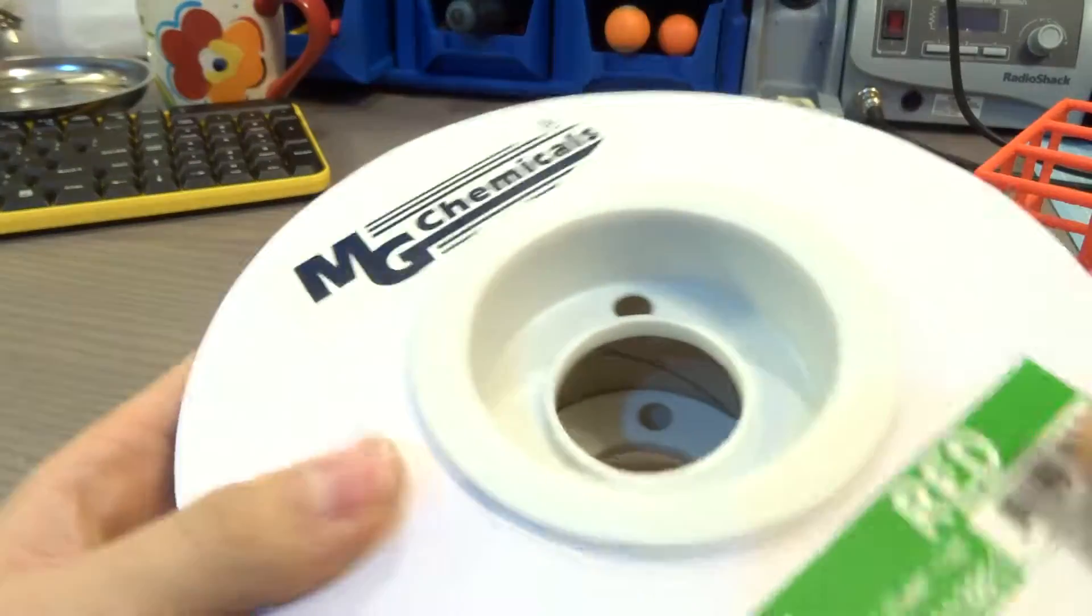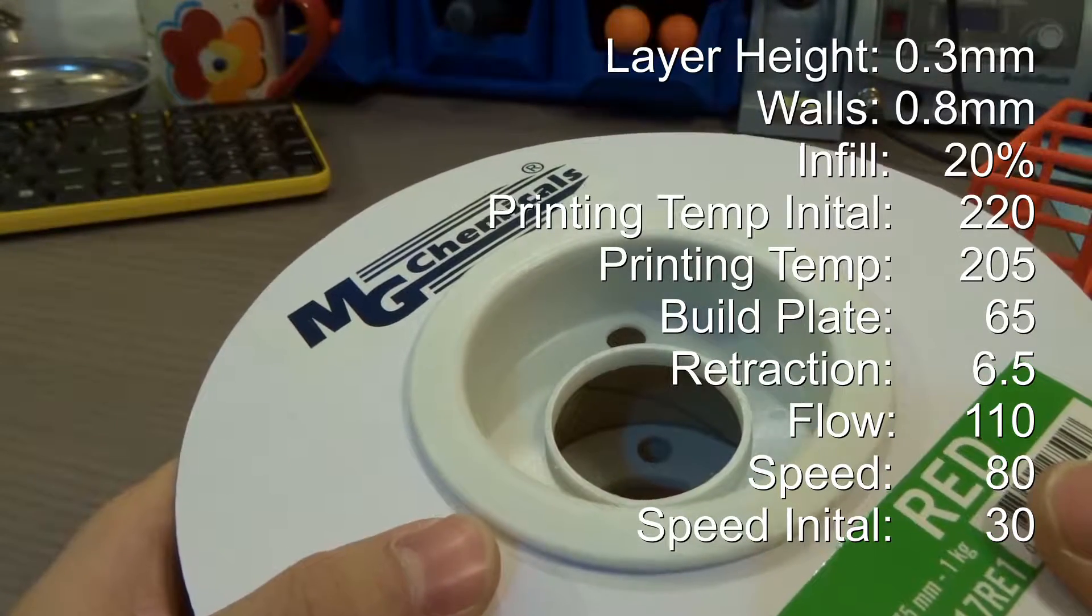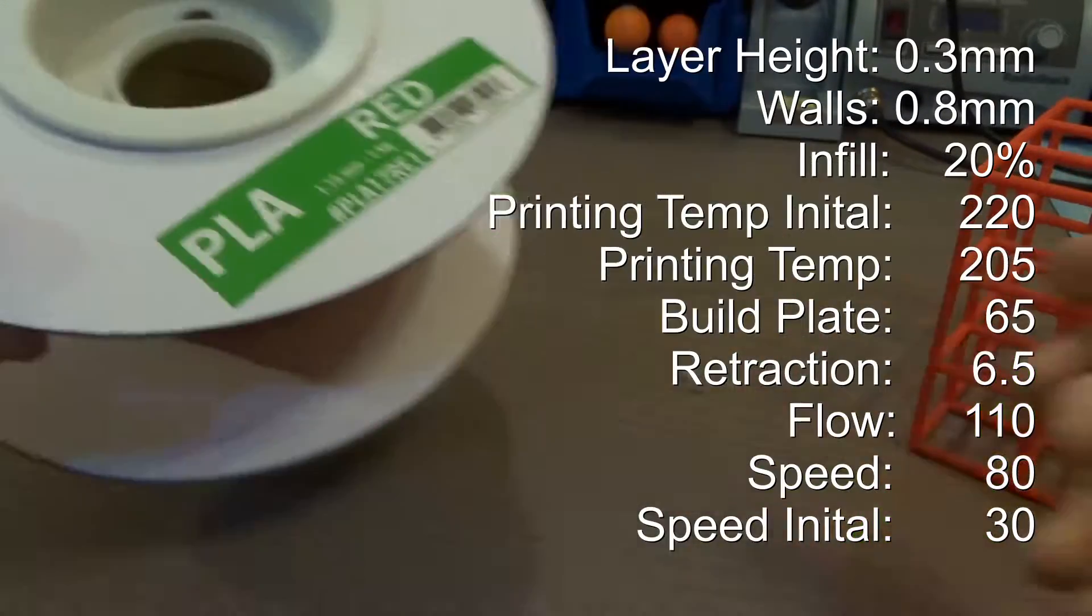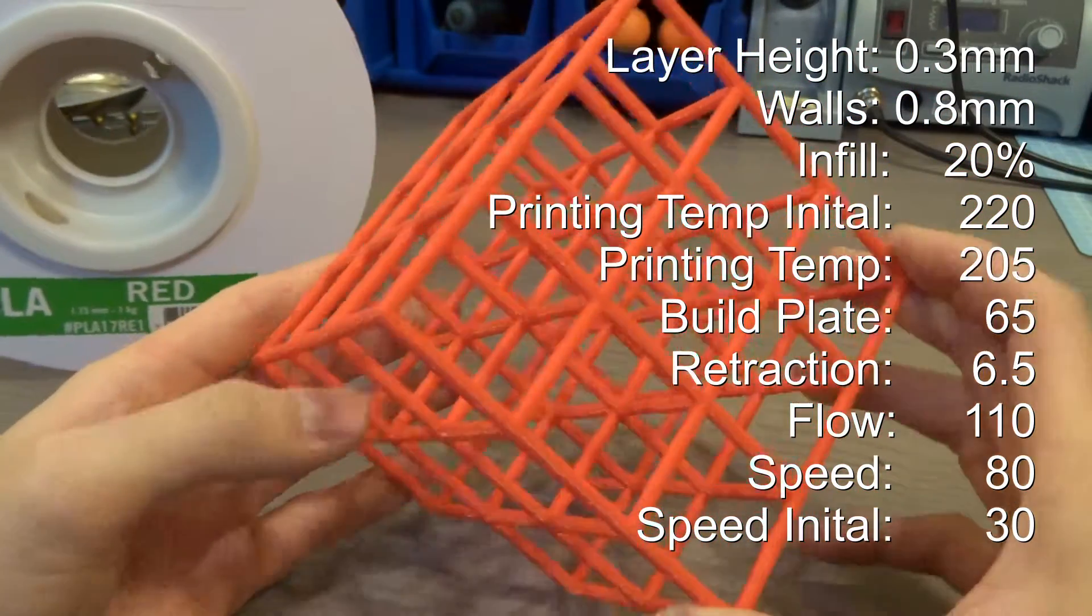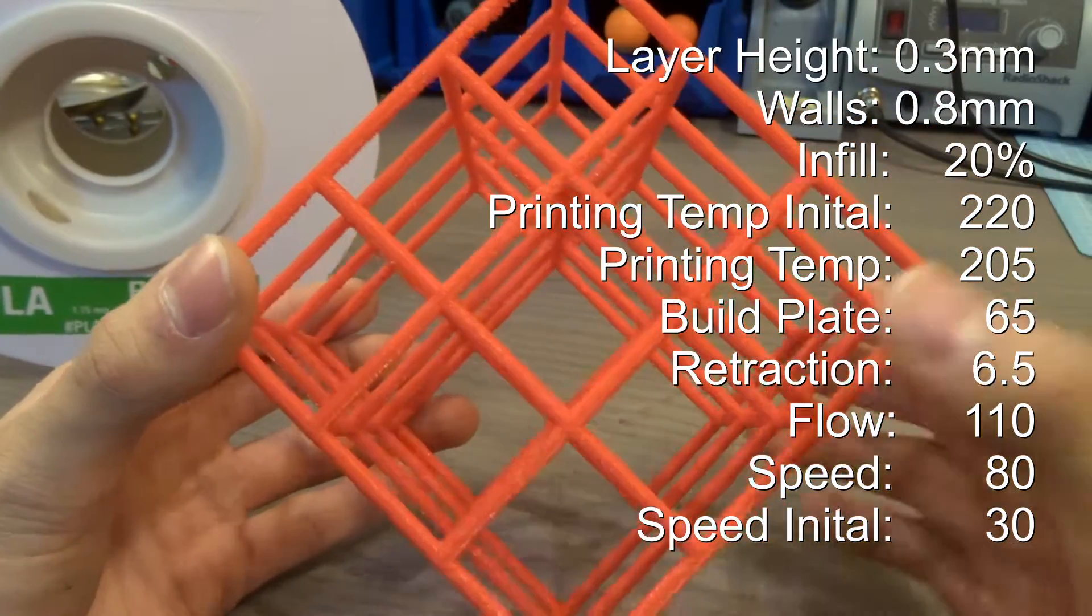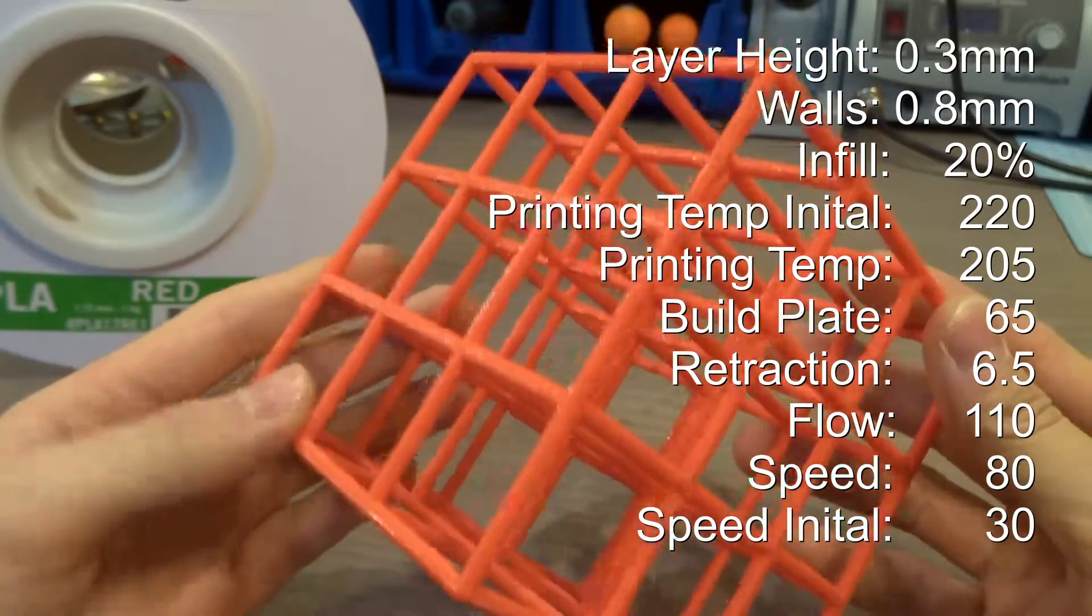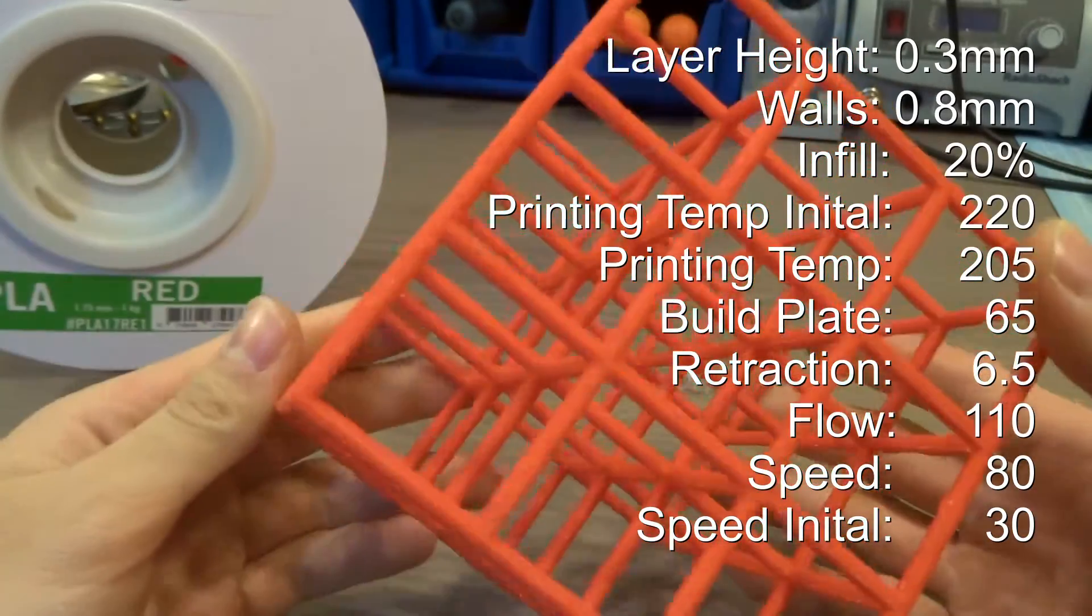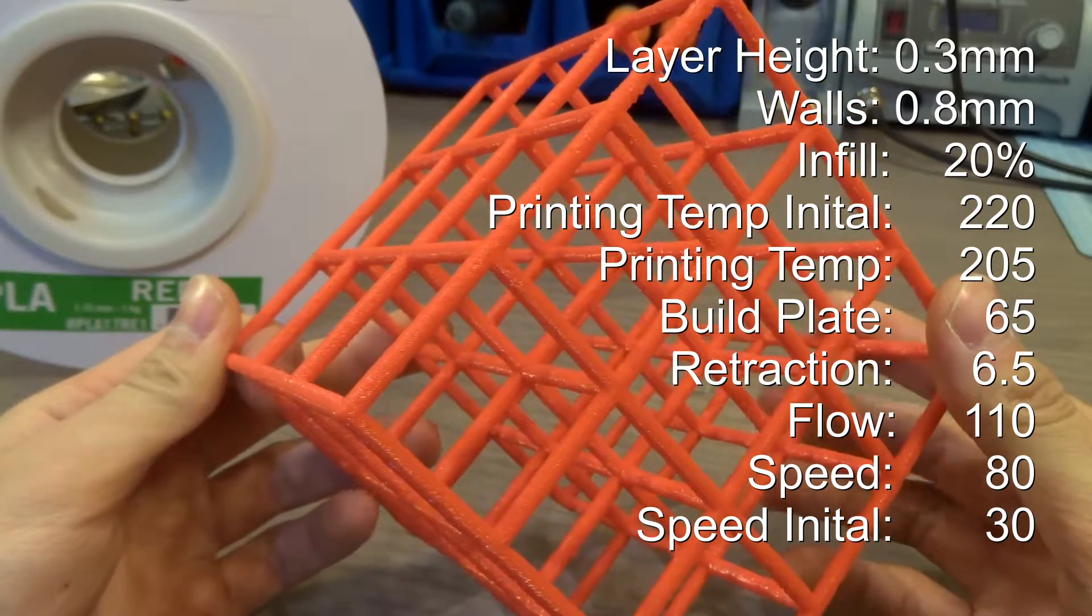If you guys have this filament, I was using 0.3 layer height, 0.8 walls and 20% infill. Printing temperature was at 220 for the first initial layer and then I turned it down to 205. So when I was printing these overhangs, it can quickly cool down. Build plate temperature was at 65. Retraction was enabled to 6.5 millimeters. I played around with flow for quite some time and I found out that 110% works the best for me.